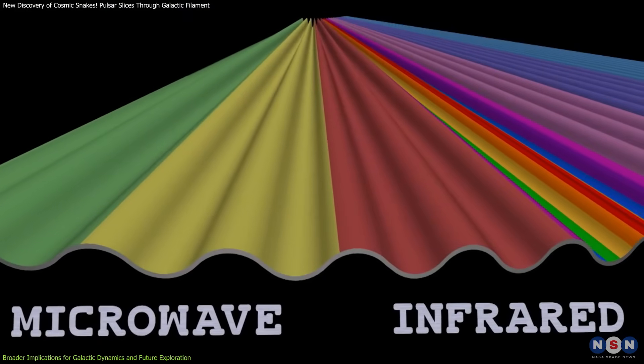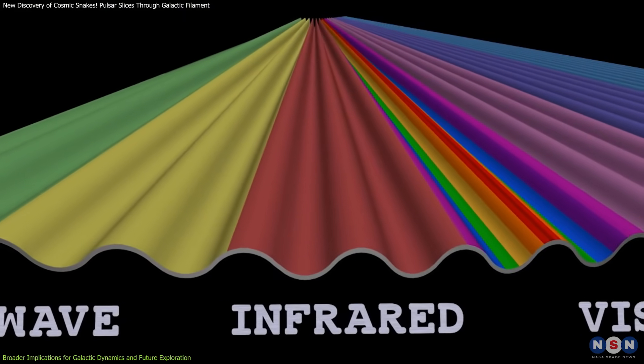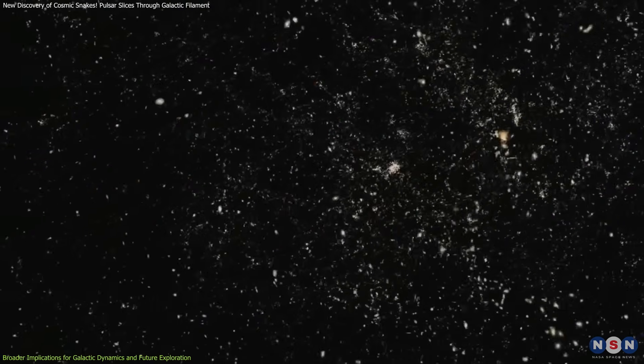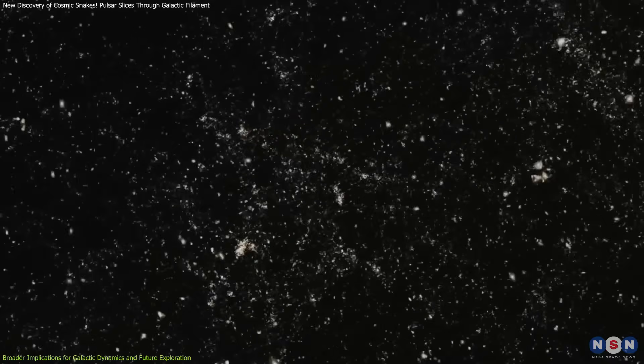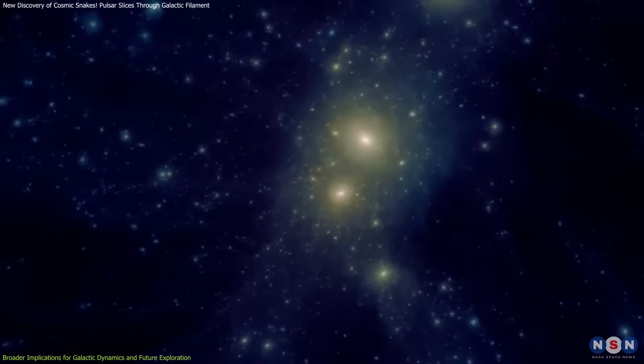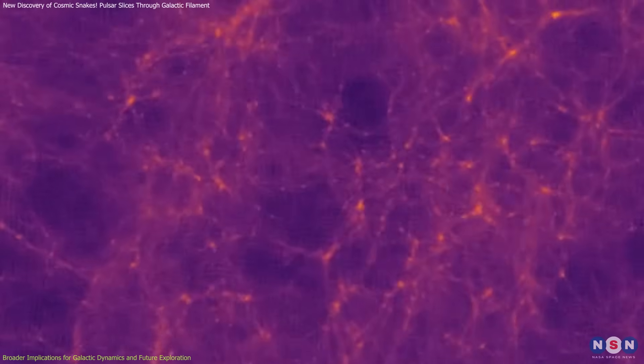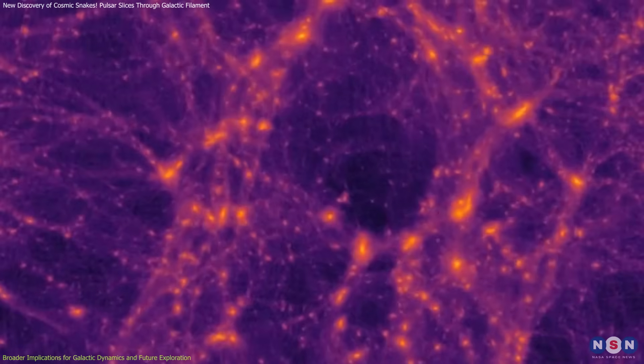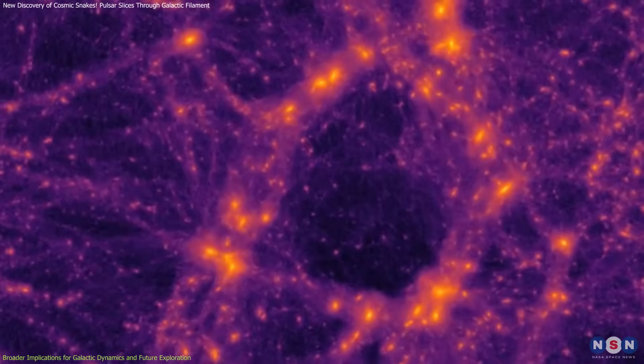By combining X-ray, radio, infrared, and optical data, astronomers can build multi-dimensional maps of galactic structures. These maps tell us not only what these features look like, but also their composition, motion, temperature, and even magnetic intensity.